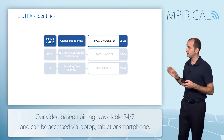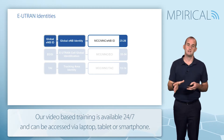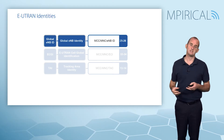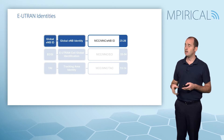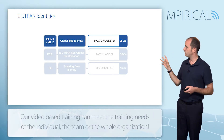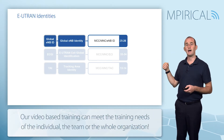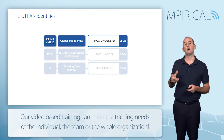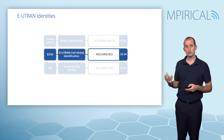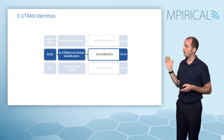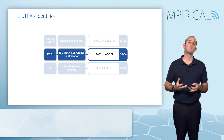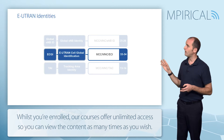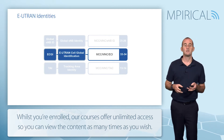The first identity we come across is the Global eNodeB ID. Every eNodeB in our radio access network has a unique identity, made up of the mobile country code, mobile network code, and eNodeB ID. Every cell within our radio access network is also uniquely identified — we have an E-UTRAN Cell Global Identity (ECGI), made up of the mobile country code, mobile network code, and E-UTRAN cell ID.